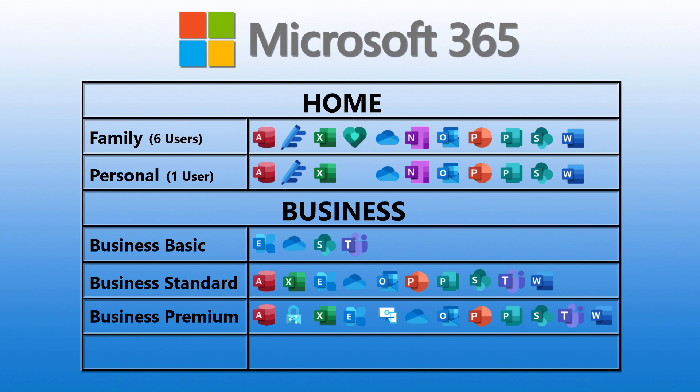There is another one, which is Microsoft 365 Apps. This only includes the downloadable apps: Access, Excel, OneDrive, Outlook, PowerPoint, Publisher, and Word. With a subscription, you will always have the latest features, the latest fixes, security updates, and ongoing tech support at no additional cost. You can choose to pay monthly or yearly. The Microsoft 365 Family Plan lets you share your subscription with up to six people and use your apps on multiple PCs, Macs, tablets, and phones.